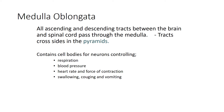The medulla oblongata is the last structure of the brain before we enter the spinal cord, and it is the most inferior portion. All ascending and descending tracts between the brain and spinal cord go through the medulla oblongata. There is also a crossing of sides called the pyramids, where the left side controls the right side of the body and vice versa. Like the pons, cranial nerves also come off of it — cranial nerves 8, 9, 10, 11, and 12, so the last five stem from the medulla.